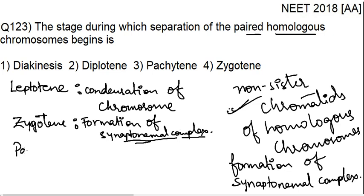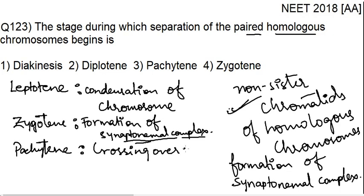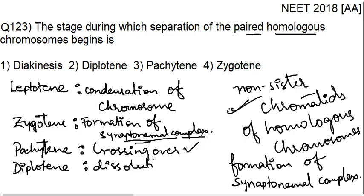The third phase is pachytene, in which the actual crossing over — the exchange of genetic material — happens. The fourth phase is diplotene, in which there is dissolution of the synaptonemal complex.